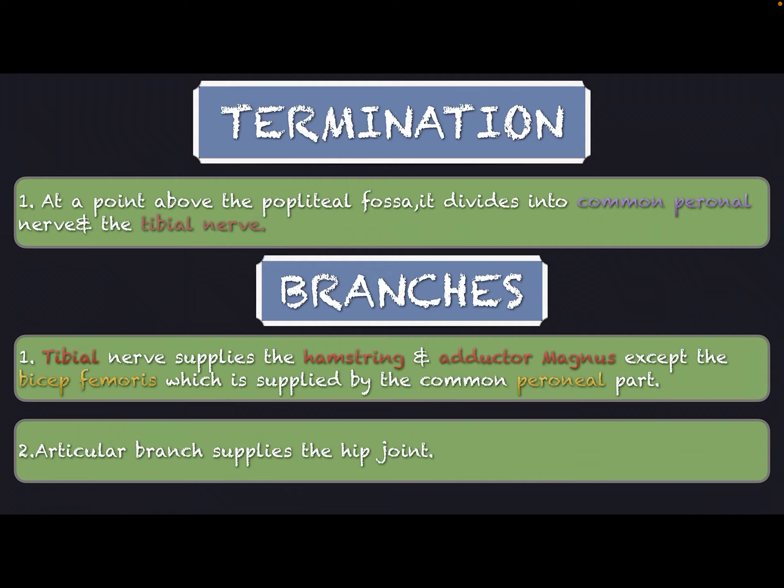Branches of the sciatic nerve: The tibial nerve supplies the hamstring muscles and adductor magnus, except the short head of biceps femoris, which is supplied by the common peroneal nerve. In articular branches, it supplies the hip joint.